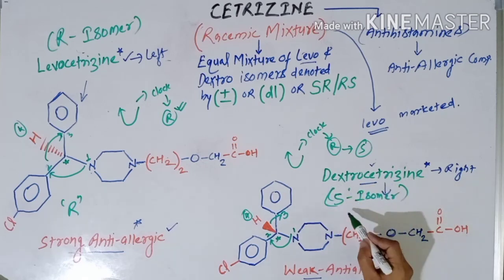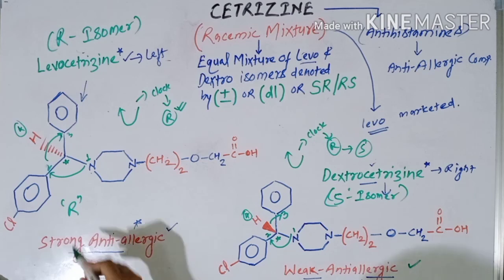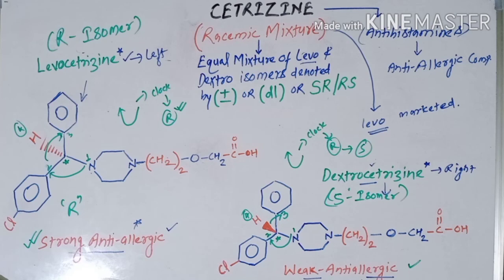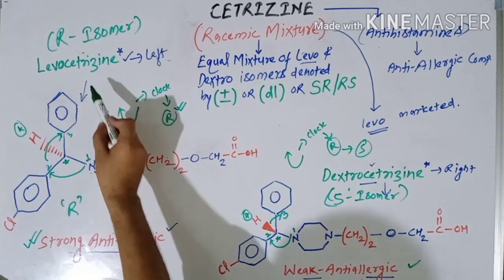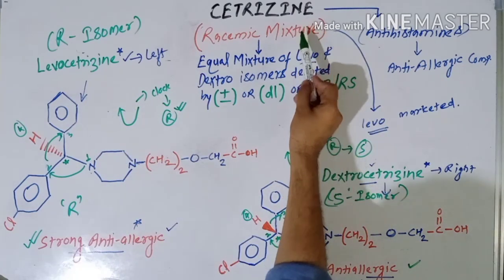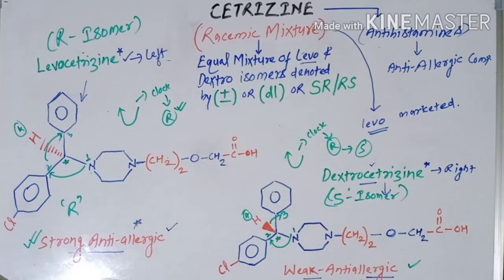In summary, the S isomer has very weak anti-allergic activity and the R isomer has very strong anti-allergic activity. That is why we now generally use levocetirizine (R isomer) in place of cetirizine, which is a mixture of both. I hope you understand the concept. Next we will see a second molecule of stereoisomers available in the market. Thank you.